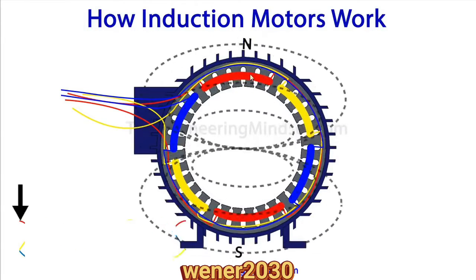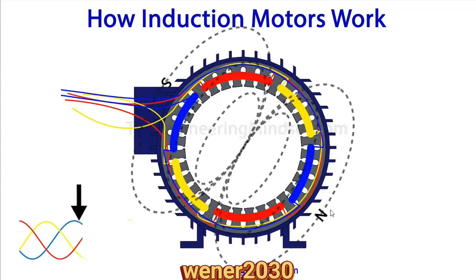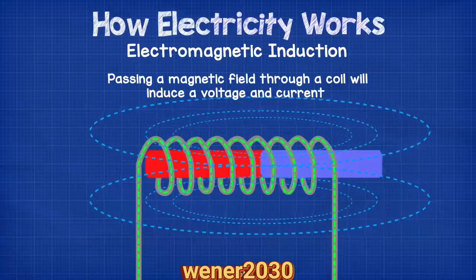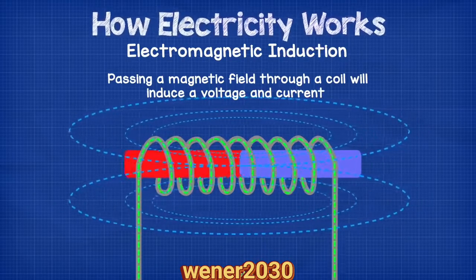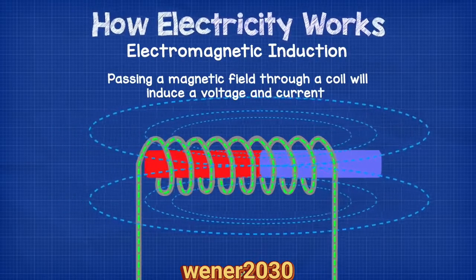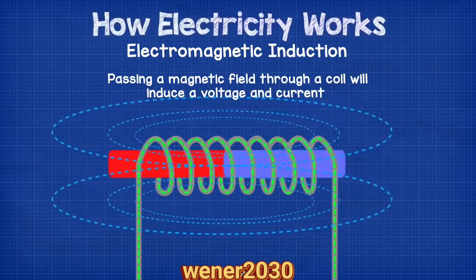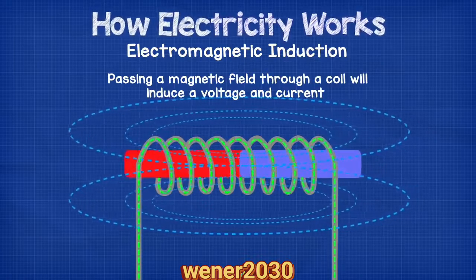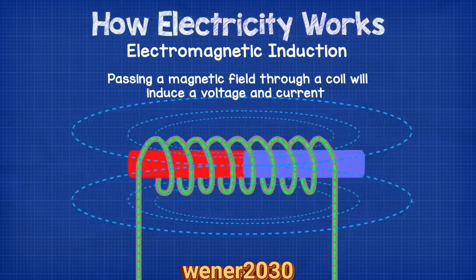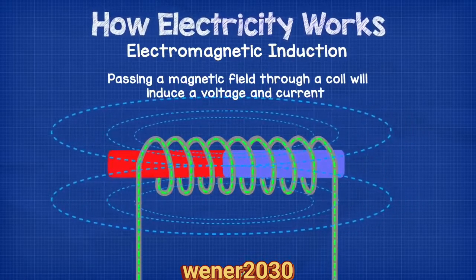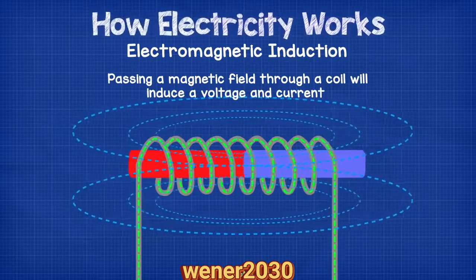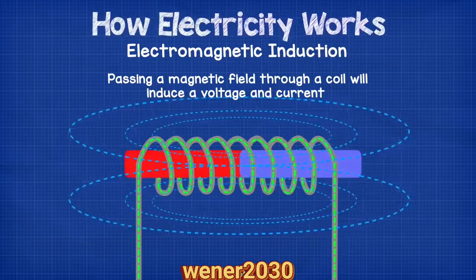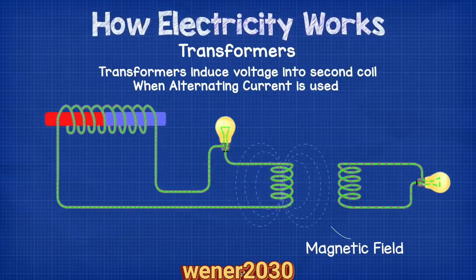If you want to learn more about induction motors, we've already covered this in another video — just see the link on screen. When a magnetic field passes across a coil of wire, it will induce a voltage in that wire, caused by an induced electromotive force which is pushing the electrons in a certain direction. If the wire is connected in a circuit, this electromotive force will cause a current to flow. This is the basis of how AC generators work, and the electricity at your wall sockets is produced in a very similar way.